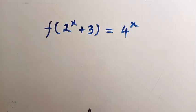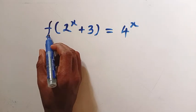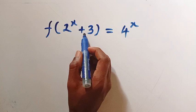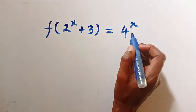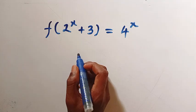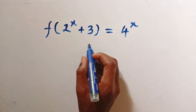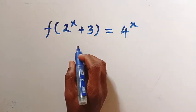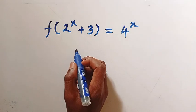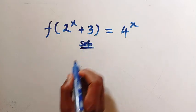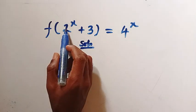Good day viewers, you are welcome. We have an interesting functional equation: f(2^x + 3) = 4^x. How do you solve this? I will solve this problem in two different ways and see which one is easier to embrace. Let's get into it. The solutions — we have the domain in exponent form 2^x + 3.